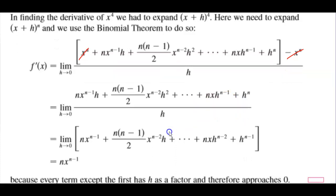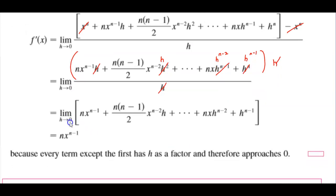So now we can factor out an h. If we factor out an h here, we have an h left over here, and then this becomes h to the n minus 2, and then this becomes h to the n minus 1. If we factor out an h, then this h divided by this h leaves us with the limit as h approaches 0 of n times x to the n minus 1 plus n times n minus 1 over 2 times x to the n minus 2 times h plus n times x to the n minus 2 plus h to the n minus 1.